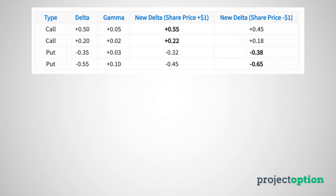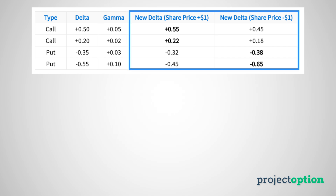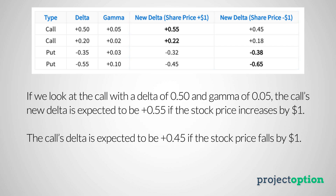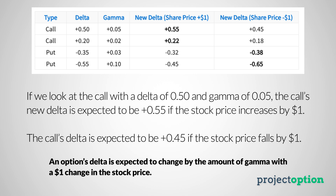In this table we're looking at different options with different delta and gamma values. On the rightmost column we can see the expected option deltas with a one dollar increase and a one dollar decrease in the stock price. For example, looking at a call option with an initial delta of 0.50 and a gamma of 0.05, if the stock price increases by one dollar that call option's delta is expected to be 0.55, and with a one dollar decrease it's expected to be 0.45. The option's delta changes by the amount of gamma, which is 0.05.